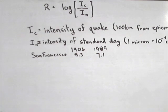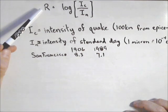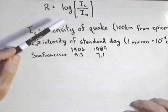In this video we're going to talk about an application of logarithms and how they're used for measurements on the Richter scale. The definition is R equals log of I sub c over I sub n.